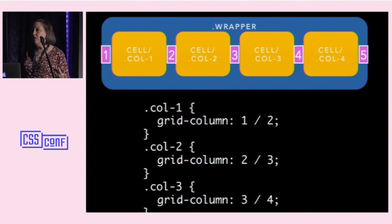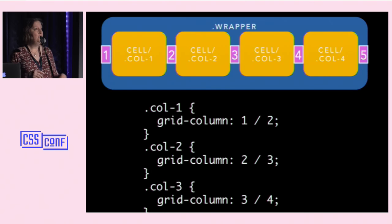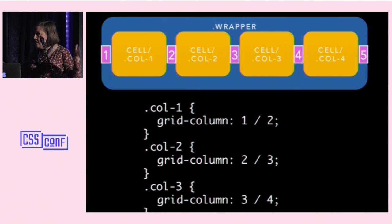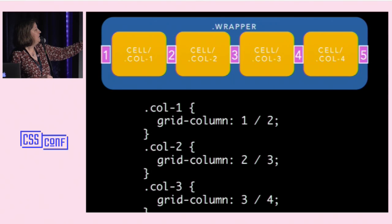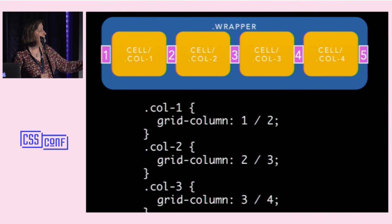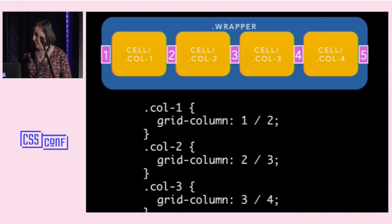There are a couple of different ways to write your grid-based layout code, and this is the one that resonates with me. If you start counting the separator lines between each one of these cells, we can start numbering them — and we count like humans, not like engineers, so we start with one, not zero, which is really nice. For each cell, we write what columns it spans. So this first one goes from one to two — that's grid-column: 1 / 2. The next one goes 2/3, then 3/4, and the last one is 4/5.